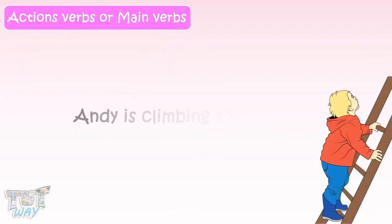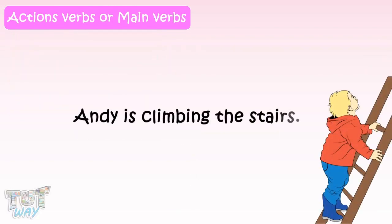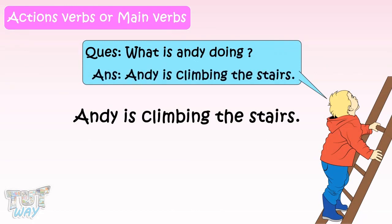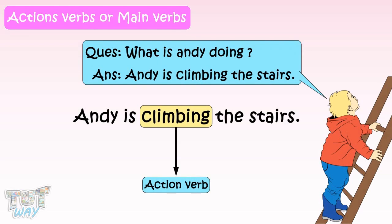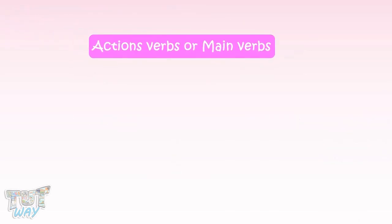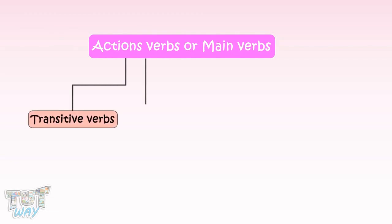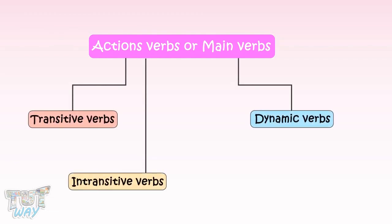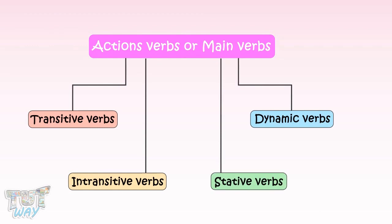Andy is climbing the stairs. What is Andy doing? Andy is climbing. So, the action verb is 'climbing.' Action verbs can be further classified into transitive verbs, intransitive verbs, dynamic verbs, and stative verbs.